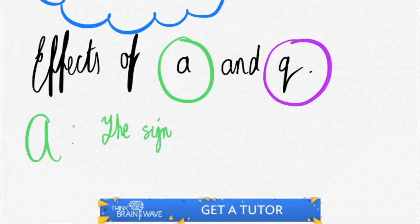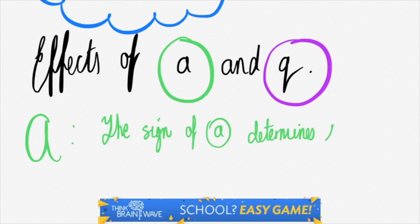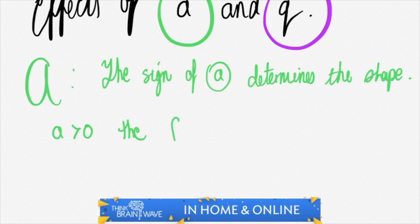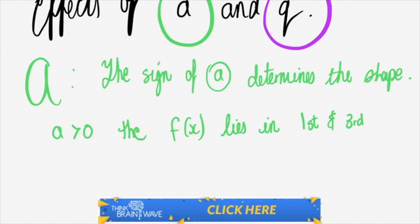When you look at a, you need to look at the sign of a to determine which quadrant the two legs of the hyperbolic function will lie in. So when a is positive, which means it's greater than 0, the function lies in the first and third quadrant.